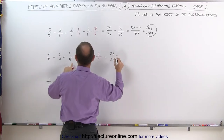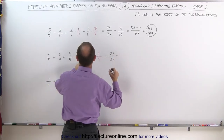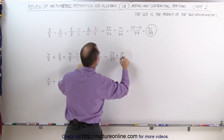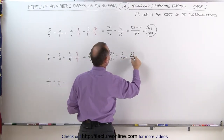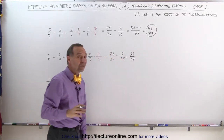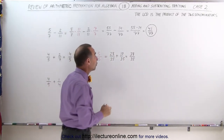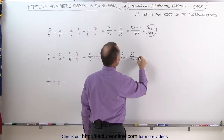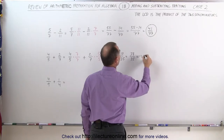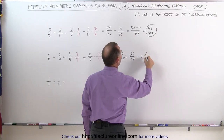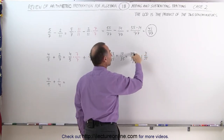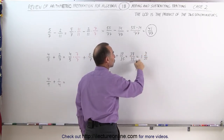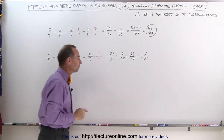This therefore becomes twenty-eight over thirty-five plus ten over thirty-five, which is equal to thirty-eight over thirty-five. If you want to write that as a mixed number, you can: thirty-eight over thirty-five equals one and three over thirty-five. If I subtract thirty-five from thirty-eight, I get three, and thirty-five divided by thirty-five is of course one whole number.